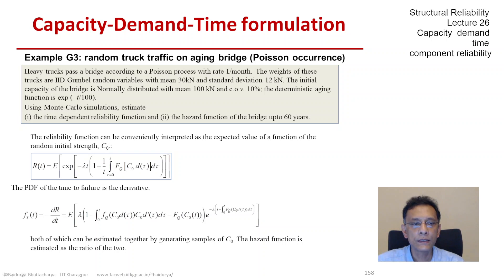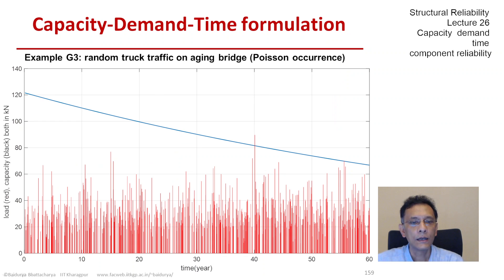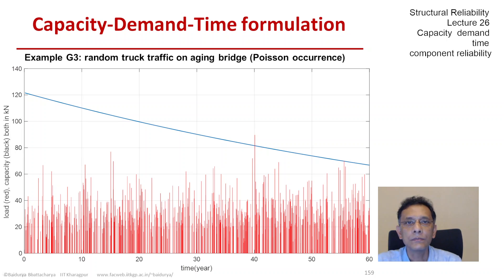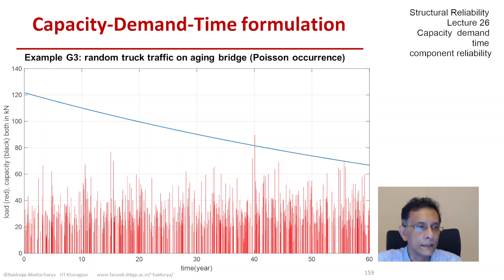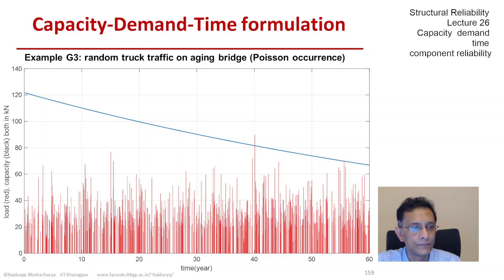Before we present the results, let's get a pictorial sense of what's happening with the loads and the strength. This is just one realization of the process. The blue line at the top is the strength, which is deteriorating as a function of time. This particular realization started at somewhere around 122 and then dropped off to something like 68.